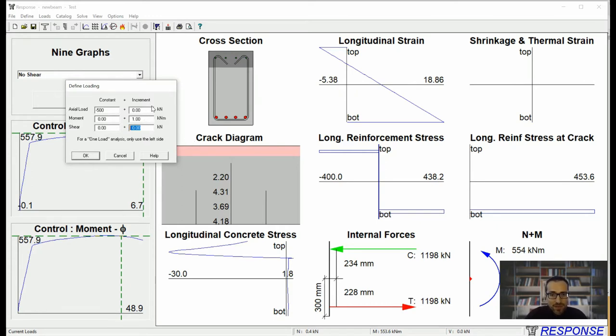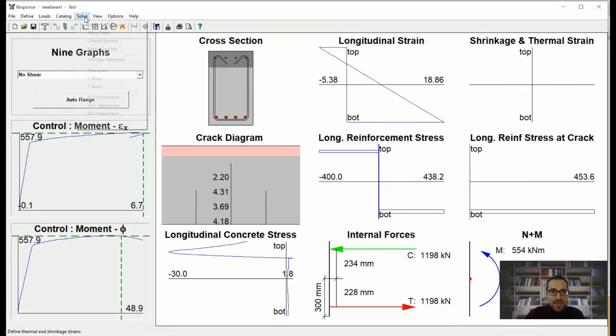Modified compression field theory requires the ratio between moment and shear force. So, first of all, you need to determine what section you are checking. Are you checking it at the mid span? Are you checking it a certain distance away from the support? Based on that, you need to draw the diagrams moment and shear and you need to get the ratio. In this example, let's go with one moment and 0.5 shear force.